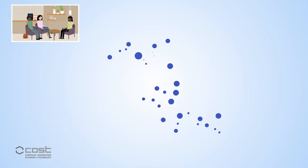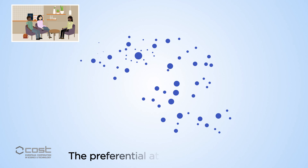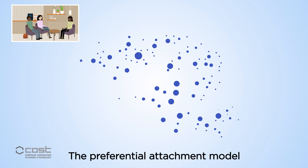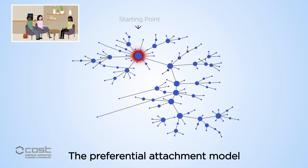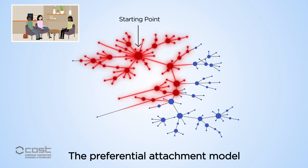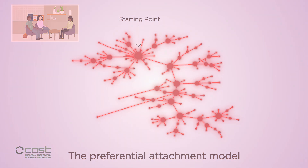Other network models, such as the preferential attachment model, better show how diseases spread through a social network. This model draws links depending on the existing number of links a point has, just like how the rich become richer.